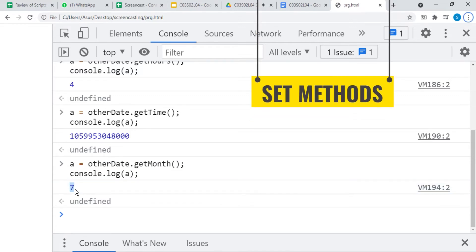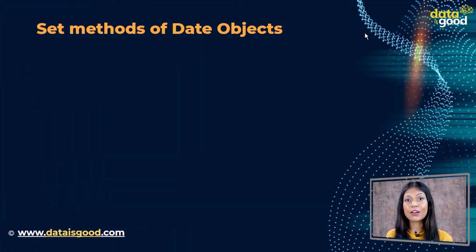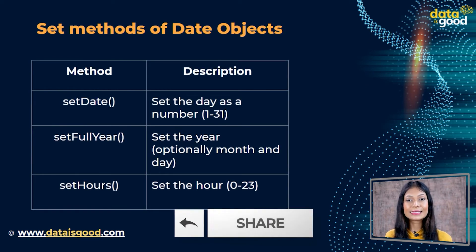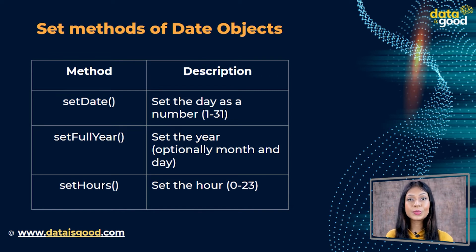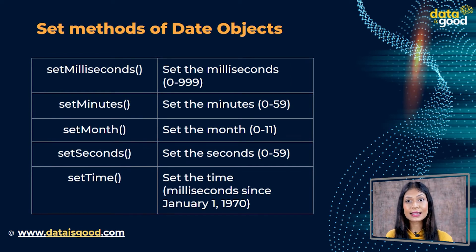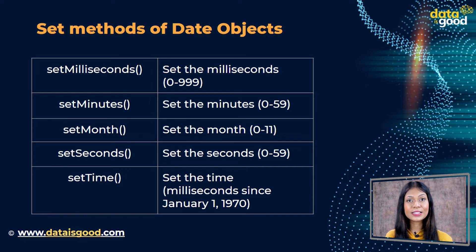There are also some set methods. Set methods are used for setting a part of a date. setDate sets the day as a number from one to thirty-one. setFullYear sets the year, optionally with month and day. setHours sets the hour from zero to twenty-three. setMilliseconds sets the milliseconds from zero to nine hundred ninety-nine. setMinutes sets the minutes from zero to fifty-nine. setMonth sets the month from zero to eleven. setSeconds sets the seconds from zero to fifty-nine.